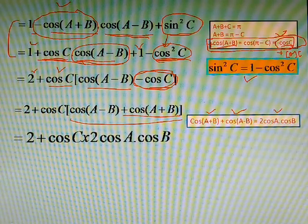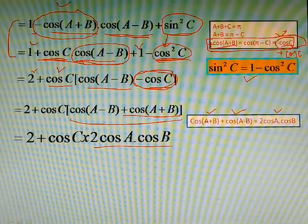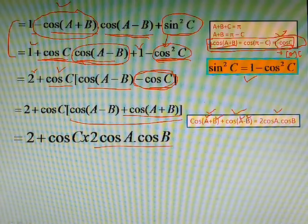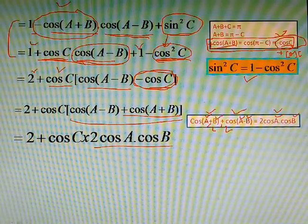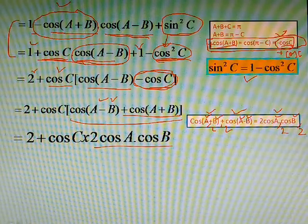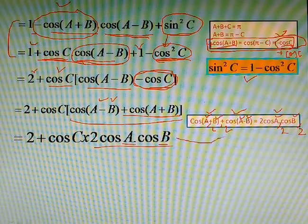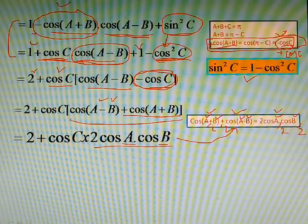Following that formula we write 2cosA·cosB. One thing I want to clarify: here we have angles a and b, and we are writing a and b again. The complete angle is a and b — if it would be a/2 and b/2 we would write a/2 and b/2 — but since it is a and b we write 2cosA·cosB following the same formula.